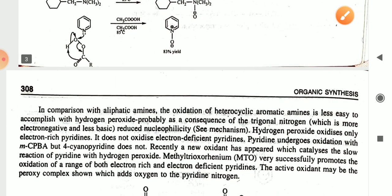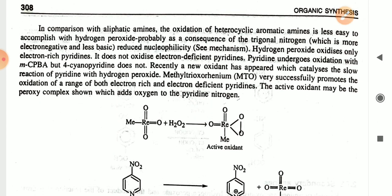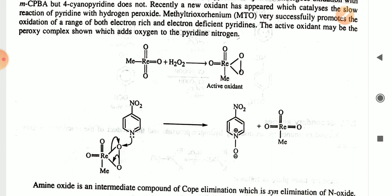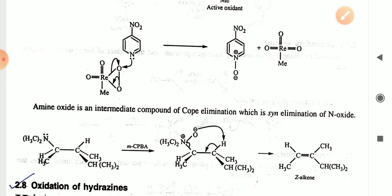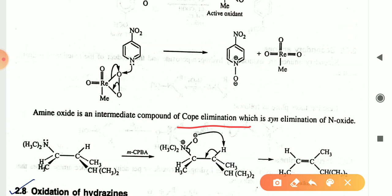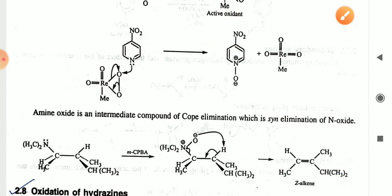The oxidation of heterocyclic aromatic amines is less easy to accomplish with hydrogen peroxide, probably as a consequence of the trigonal nitrogen. Peracid and reactivated oxidants are used for this reaction. The amine oxides undergo Cope elimination, which is a syn elimination of N-oxides to give an alkyne. For example, a tertiary amine in the presence of MCPBA converts to the alkyne.